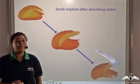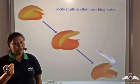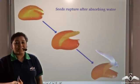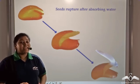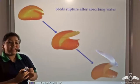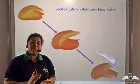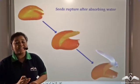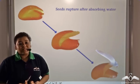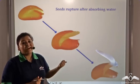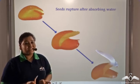Seeds absorb water as well. They take in water through the pore which is known as the micropyle. In fact, seeds take in water till they cannot hold any more water and they rupture. When they rupture, the embryo which is present inside the seed comes out and it facilitates germination. So now we know the importance of water. Without water, no germination can take place.